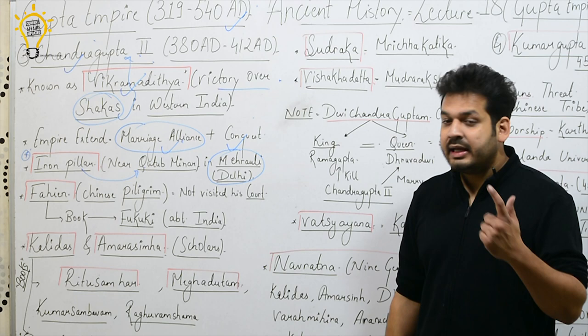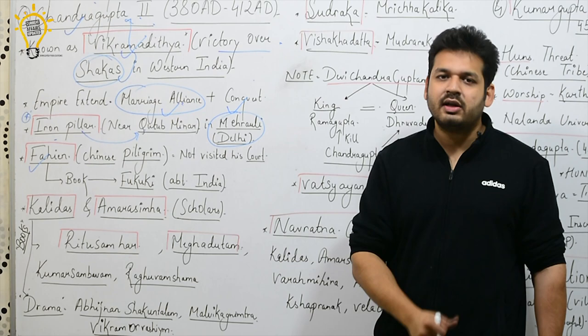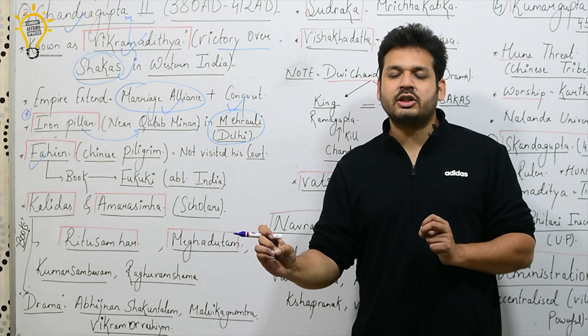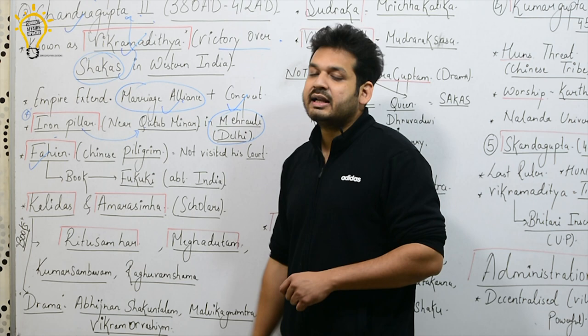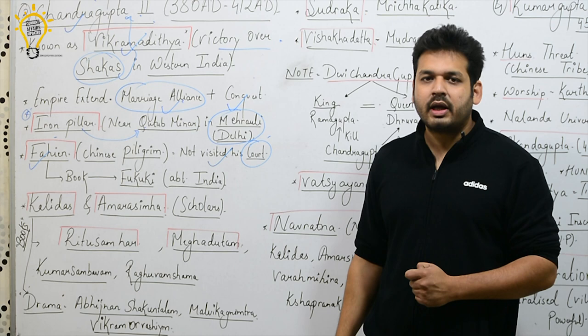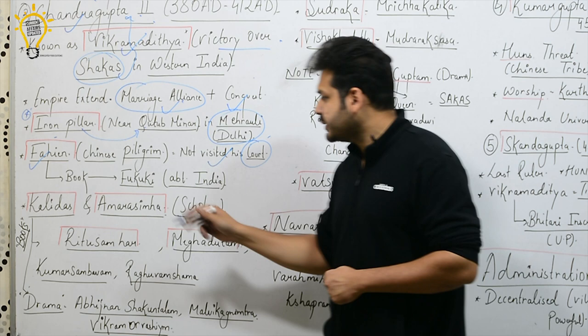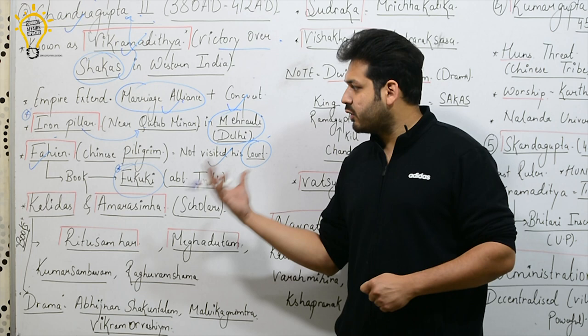The next important prelims question relates to a Chinese traveler who came at the time of Chandragupta II. He did not visit Chandragupta II's court directly, but he visited India during his reign. He wrote a very important book about India called Fo-Kuo-Ki (Fukuuki). Remember, this book was written during the time of Chandragupta II's rule and is a key prelims fact.